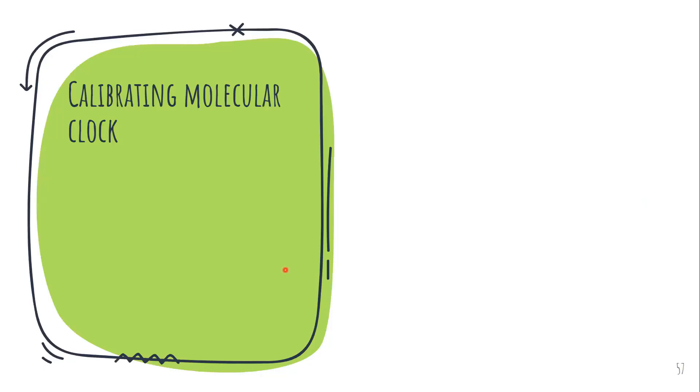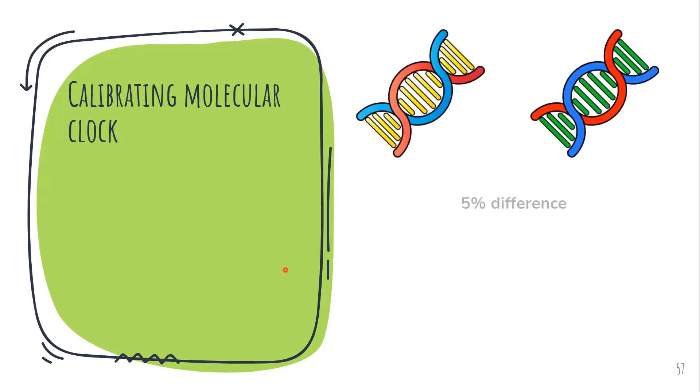Now the next topic you need to understand is how to calibrate this molecular clock. Now let me introduce the concept to you. Say I have these two DNA molecules and they are 5% different from each other.